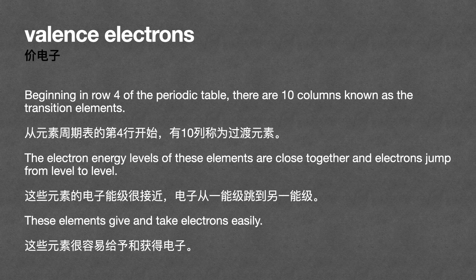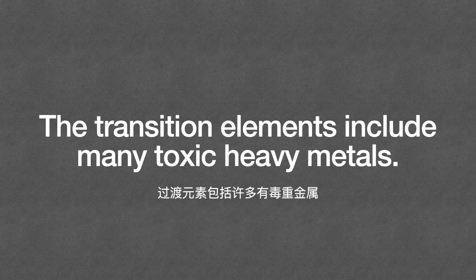Beginning in row four of the periodic table, there are ten columns known as the transition elements. The electron energy levels of these elements are close together, and electrons jump from level to level. These elements give and take electrons easily, and the transition elements include many toxic heavy metals.